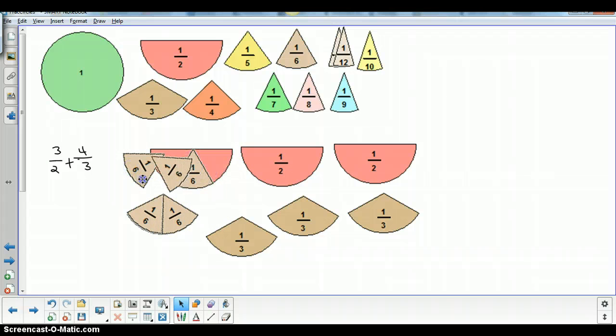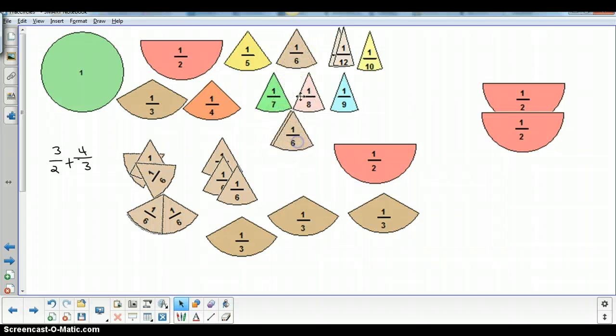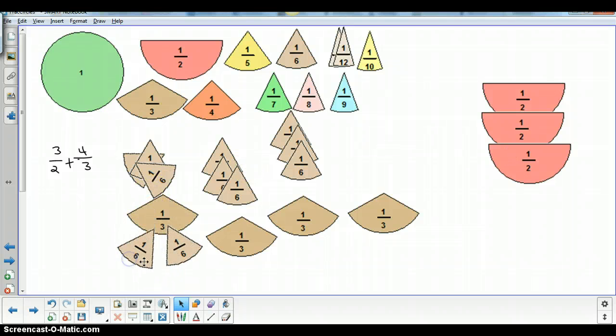So I already have this one. So we're going to take that away. And I'm going to bring 3 sixths down for this half. And I'm going to bring 3 sixths down for this half. And I've made all of those exchanges. And now here, I have these 2 sixths already exchanged for this third. I need 2 more.